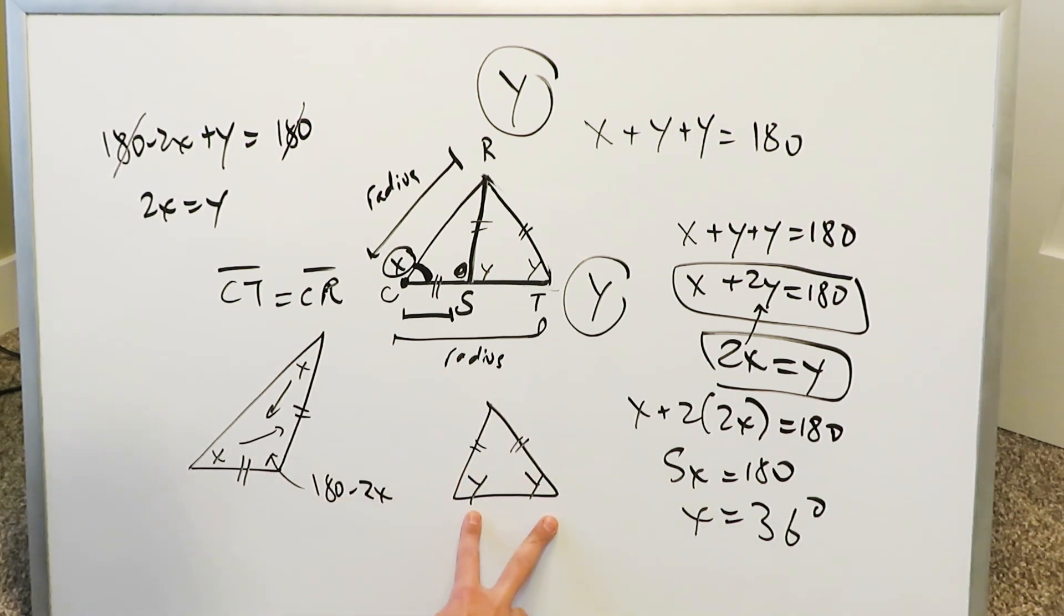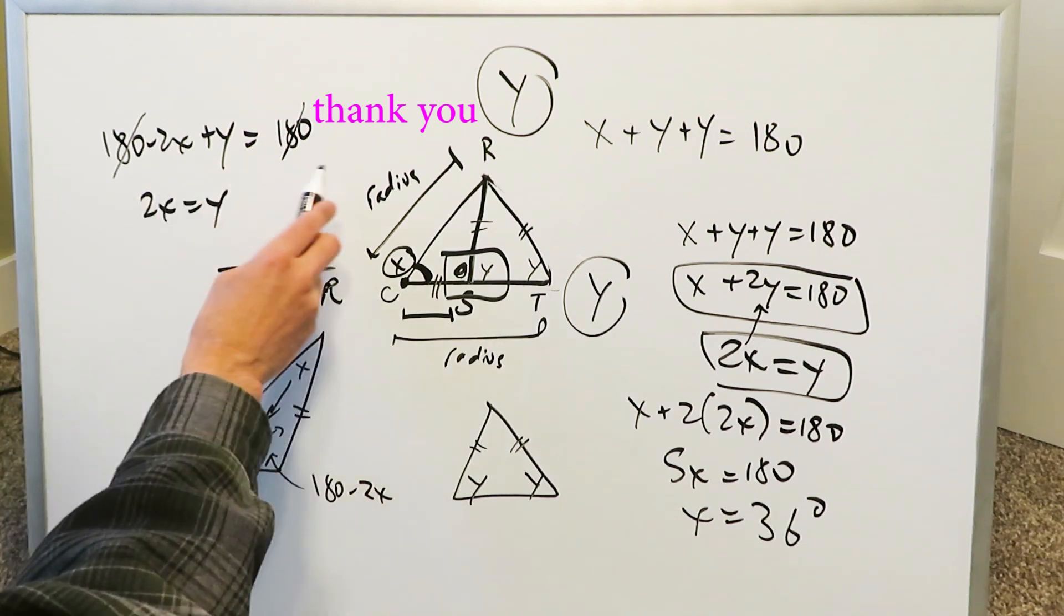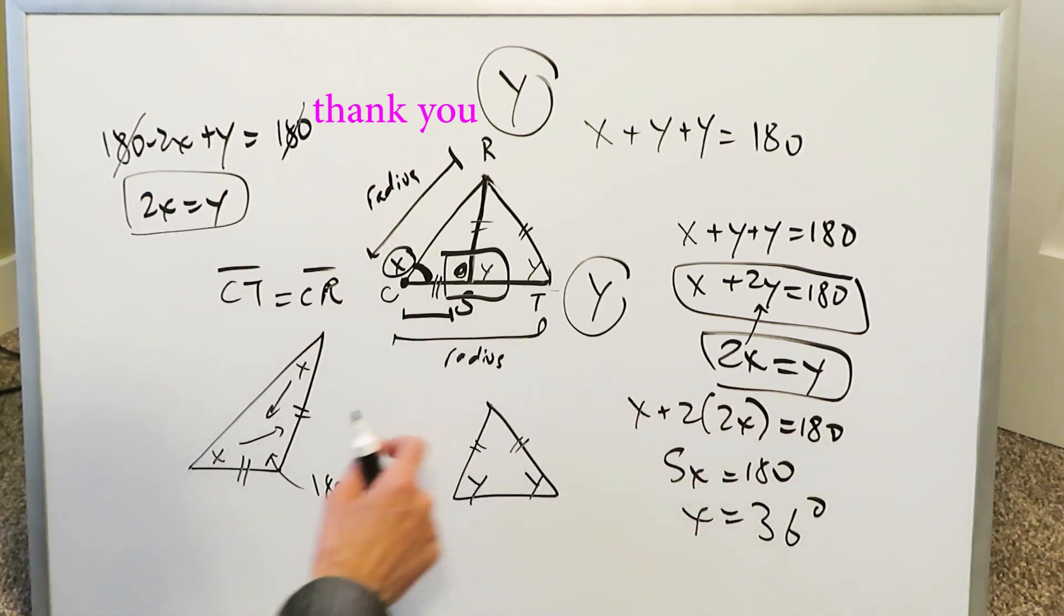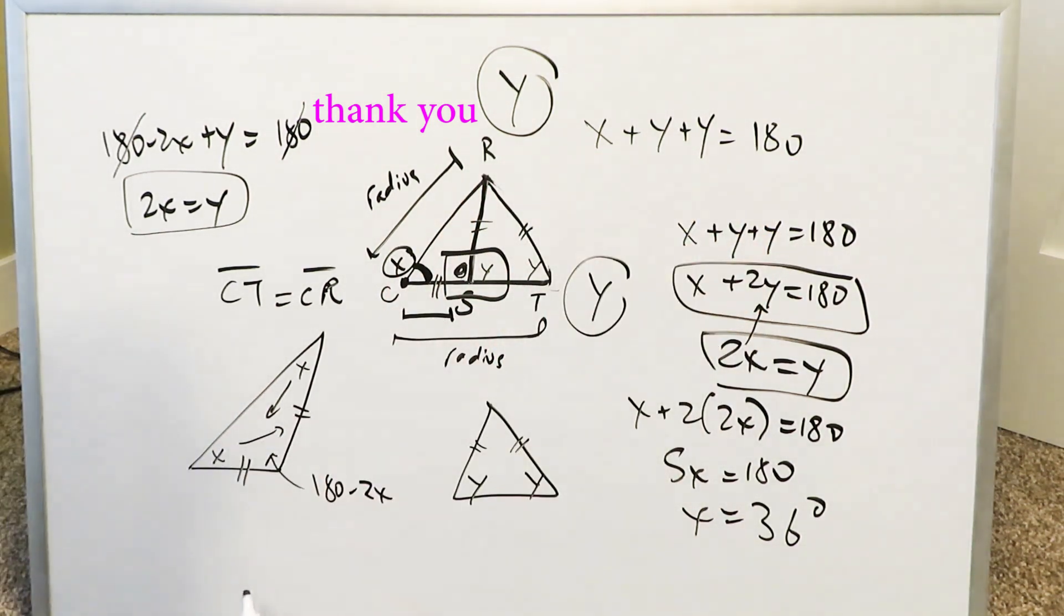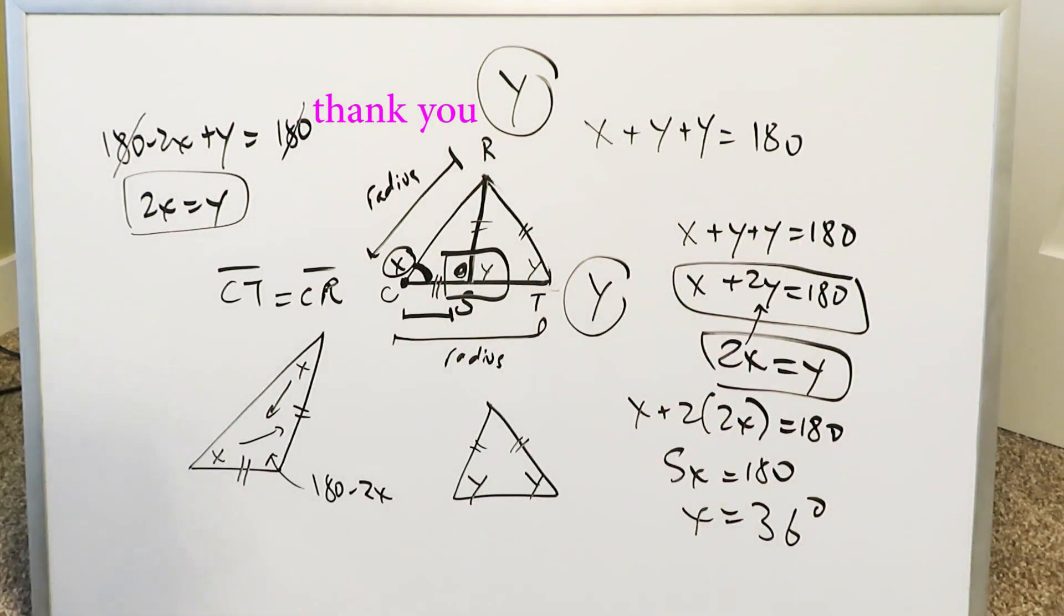You saw how we got this 180 minus 2X. You saw how we developed these Y and Y from right over here. And then you saw how this part right over here gave us a supplementary angle relationship which you saw right over here giving rise to this. Then this coming here and then the large triangle developing our other linear equation X plus Y plus Y equals 180. From there we take everything to completion. 36 degrees our answer and it should be right. And this question has been solved for you.